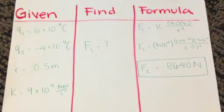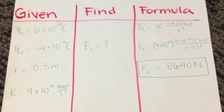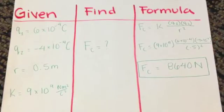First we write the given, which are q1, q2, r, and k constant.